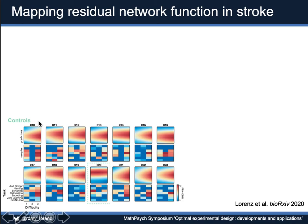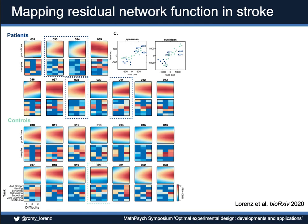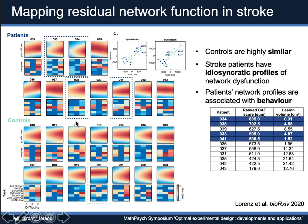Starting with the control results: individual controls look highly similar, replicating our earlier work showing high inter-subject reliability. In contrast, patients show idiosyncratic profiles of residual network function — they look very different from each other and from controls. A T-SNE analysis shows patients clustering together in dark blue and healthy controls in turquoise. Interestingly, we also identified four patients that look a little bit like controls, and indeed qualitatively inspecting their profiles, they look highly similar to controls. When we look at behavior, those are among the best five performing patients on a large test battery outside the scanner.